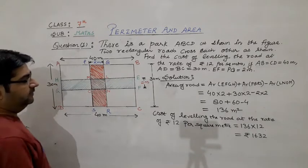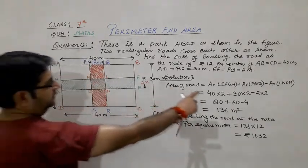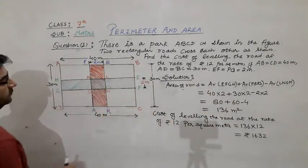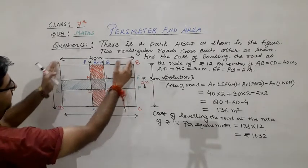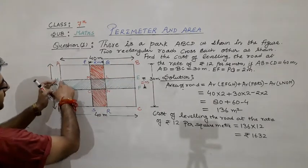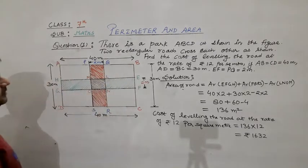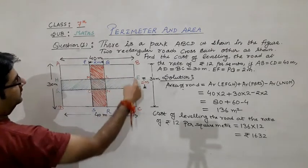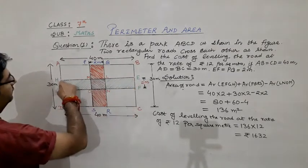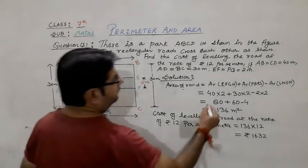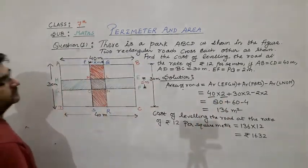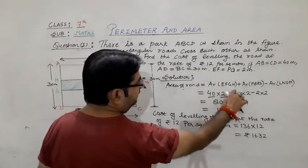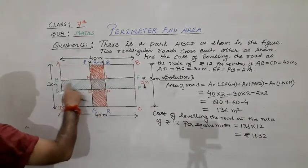Now we will calculate the area of EFGH. EFGH is a rectangular road having the length 40 meters, that is EH is equal to AB, 40 meters. And the width is 2 meters. So length is 40 meters, width is 2 meters. L into B, length into breadth, that is 40 into 2, 80 square meters is the area of EFGH.